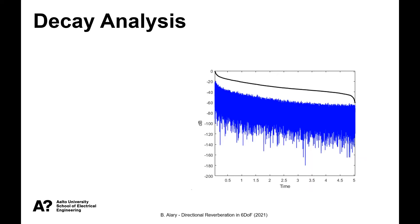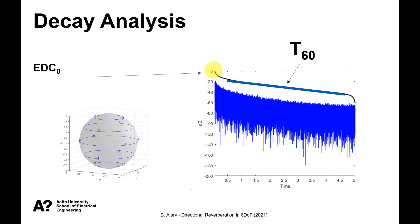So to analyze the captured data set, as we entered previously, we use the EDC method. And this allows us in this case to extract a value for the EDC zero for each direction. And the EDC zero is essentially the EDC value at time zero, which gives us the total amount of energy in the impulse response. And we can also extract T60 values by looking at the slope of each EDC curve. And we perform this for a set of directions.